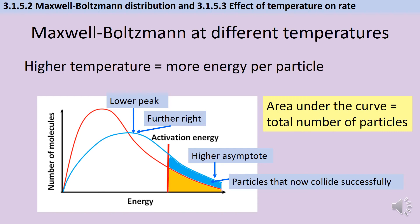The particles that are now shaded in blue represent ones that wouldn't have collided successfully in the original reaction but now are. So the area of that blue section represents the increase in rate of reaction.